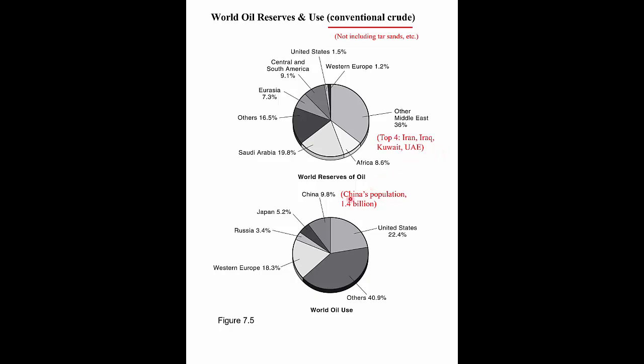The other thing to point out is China. This is a slightly old graphic, but China represents about 10% of the world's oil use and it's probably growing rapidly. China doesn't even appear on the reserves chart, so they don't have their own oil supply. If China grows rapidly using inexpensive crude oil, it could have a very large impact on the supply and demand for world crude.